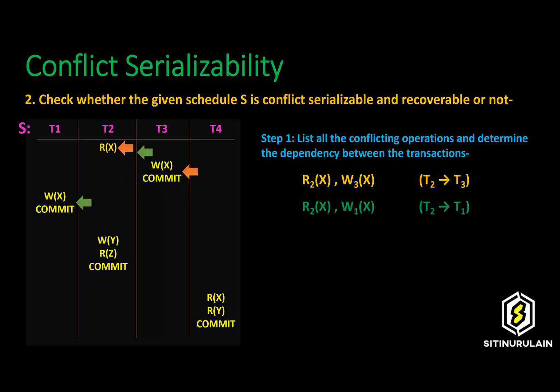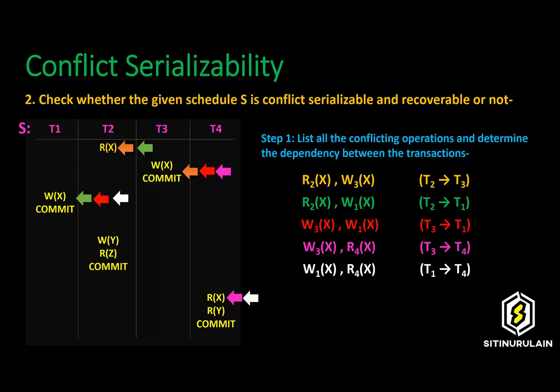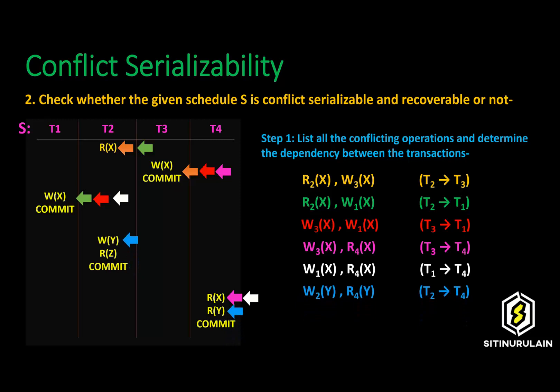The second operation is read item X for transaction 2 and write item X for transaction 1. The third operation is write item X for transaction 3 and write item X for transaction 1. The fourth operation is write item X for transaction 3 and write item X for transaction 4. The fifth operation is write item X for transaction 1 and write item X for transaction 4. The sixth operation is write item Y for transaction 2 and write item Y for transaction 4.